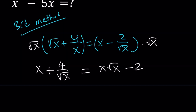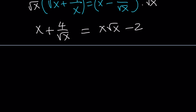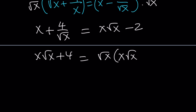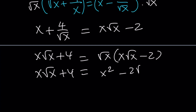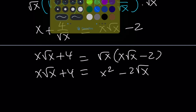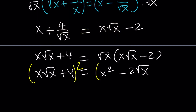Then we can go ahead and make a common denominator — x square root of x plus 4 — and multiply the square root of x by the right-hand side and distribute. This gives us x square root of x plus 4 equals x squared minus 2 times the square root of x. Then you can square both sides and get rid of some of the radicals.